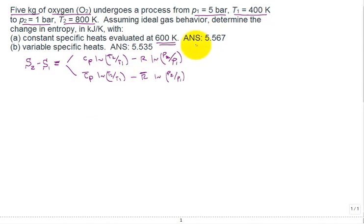Or you could put C sub P bar natural log of T2 over T1 minus R bar natural log of P2 over P1. What's the difference? This is on a per unit mass basis, this is on a per unit amount basis. The mass measured in kilograms, the amount in kilomole. So if you want to do it on a mass basis, then we need to calculate the mass.